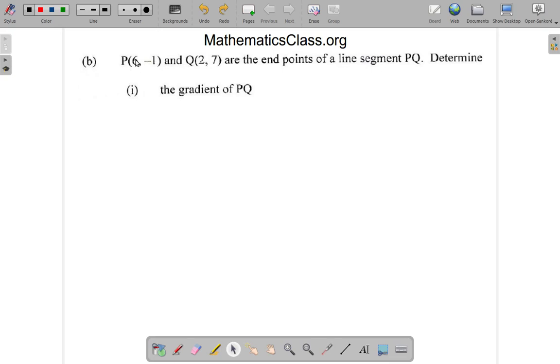Part B says the point P(6, -1) and Q(2, 7) are the endpoints of a line segment PQ. Determine the gradient of PQ.